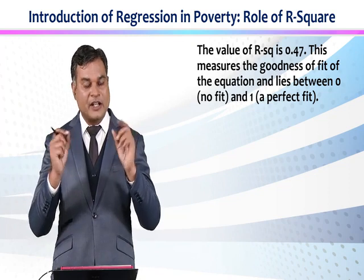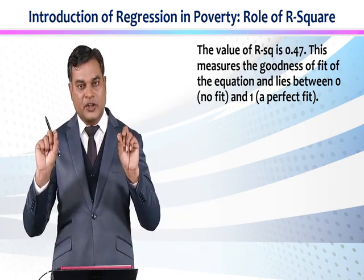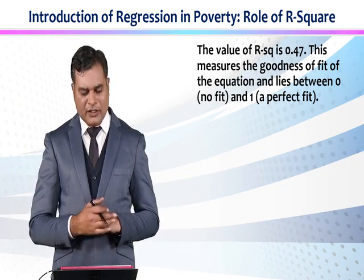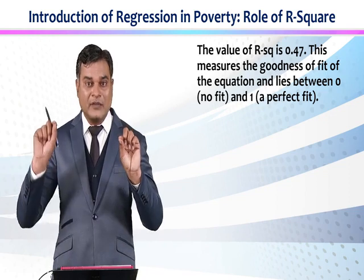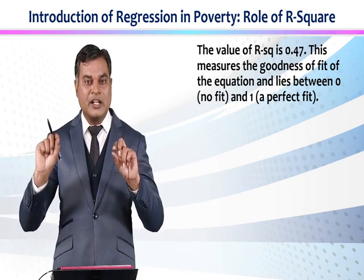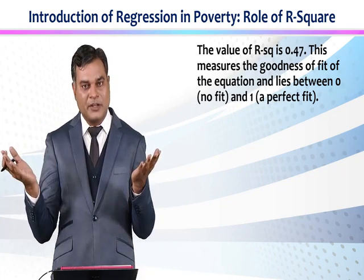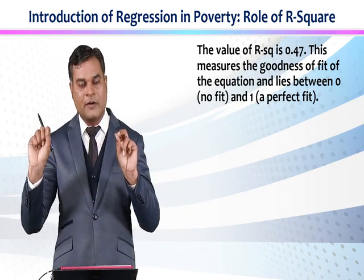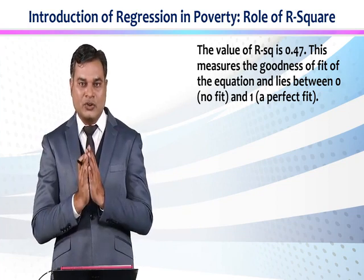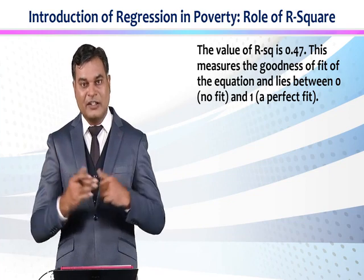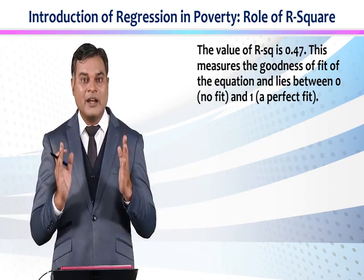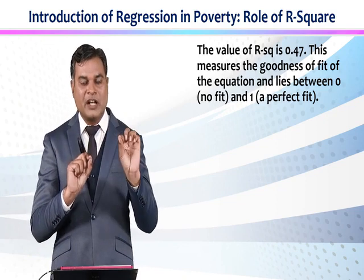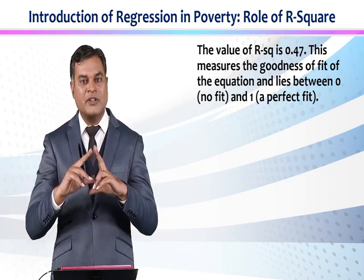If you have two variables — like we took the example: poverty is a function of education, so due to change in education, poverty is changing — if R-square's value is 0.47, it means 47% change in poverty is because of education, and the remaining 53% changes in poverty are because of some other variable not used in the model. Now if we regress another model where poverty is a function of education and health, using these two variables will increase your R-square — its value could become 0.6 — meaning 60% changes in poverty are because of education and health, and remaining 40% are not explained in the model.